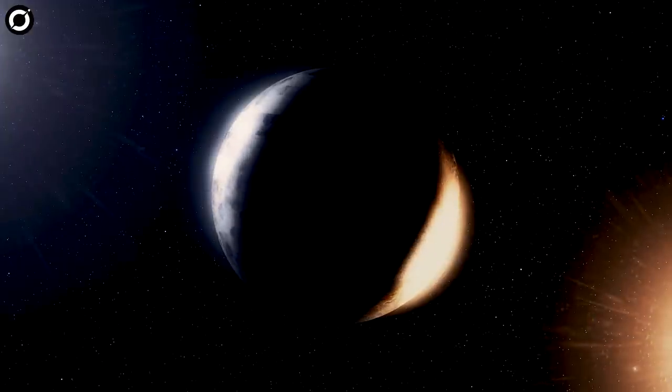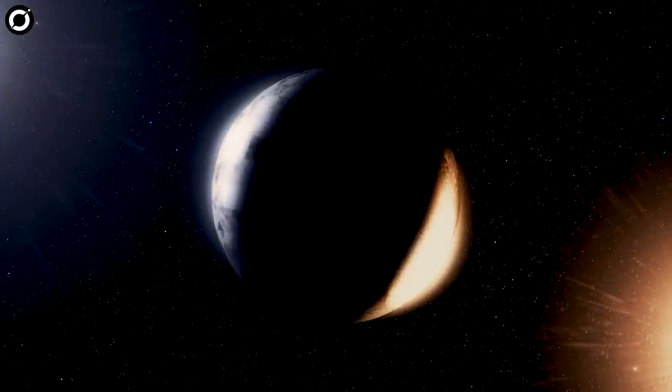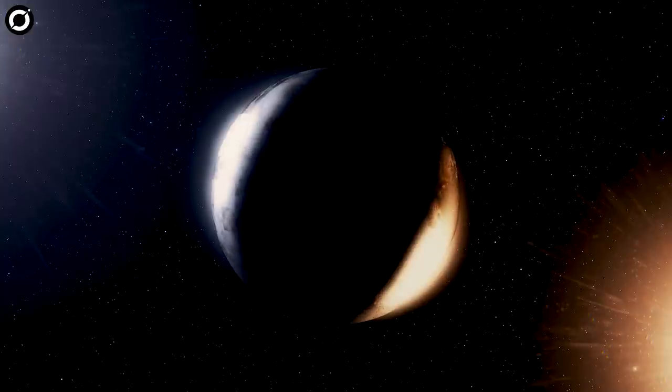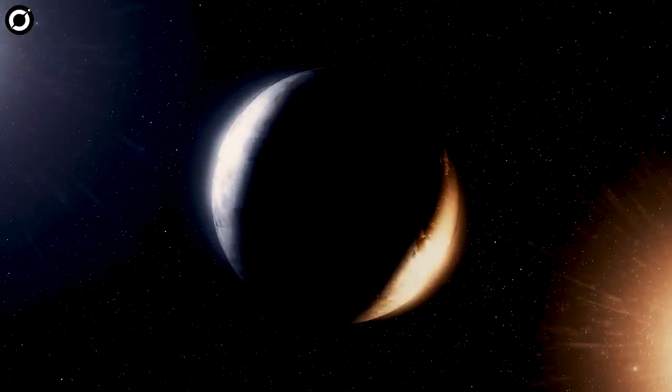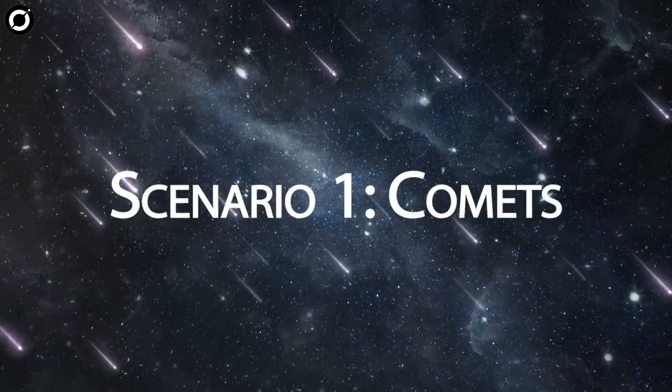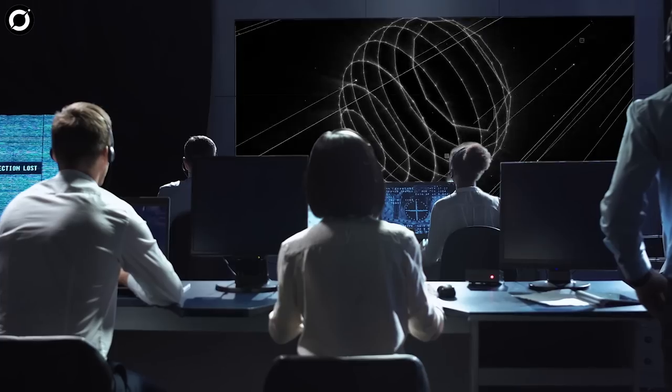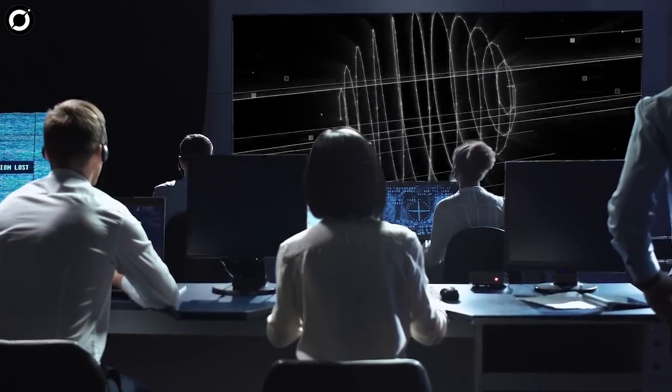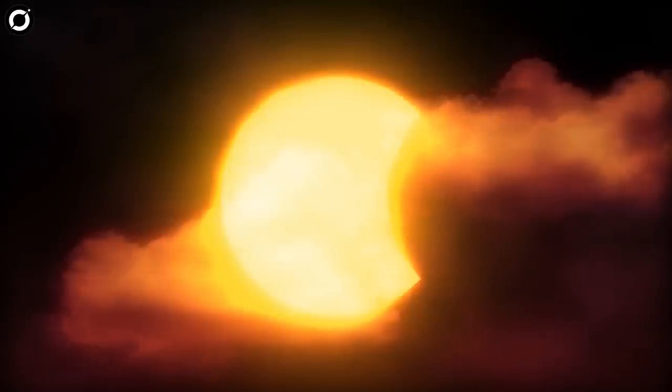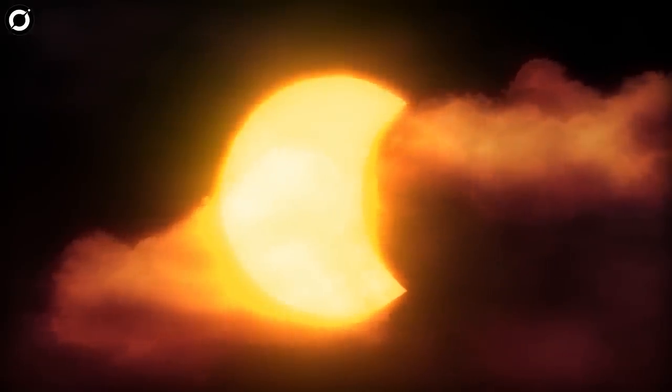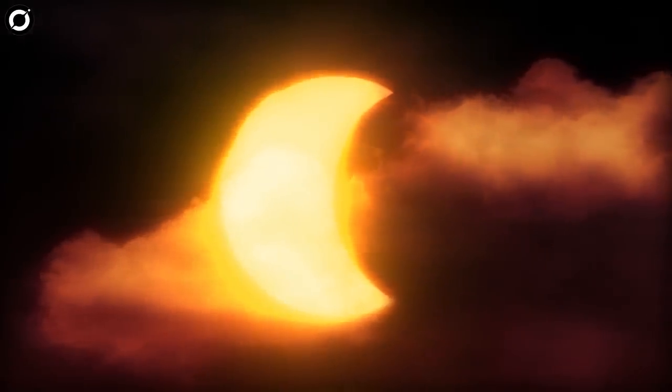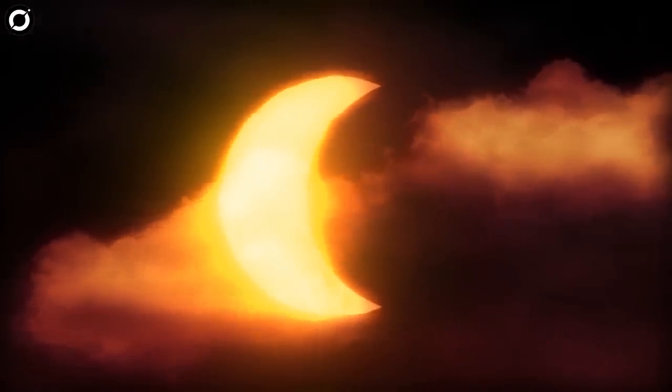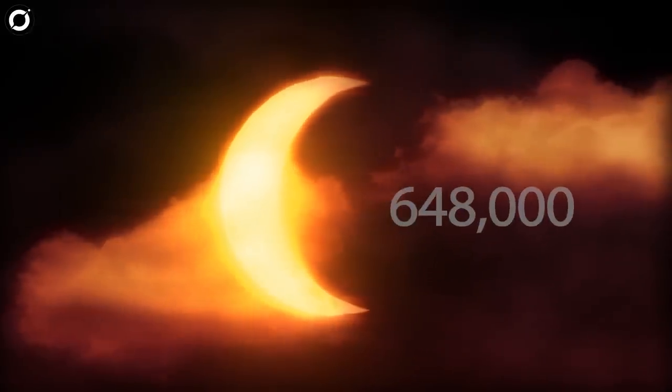Scientists have tried and tried and tried to come up with a natural explanation for what's happening around the star. Scenario one: comets. Someone suggested that a barrage of comets is the reason for the strange dipping, but that was quickly ruled out as it would take tens of thousands of comets to dip the luminosity of the star. 648,000 exocomets to be precise.